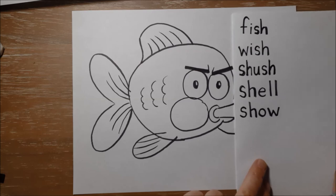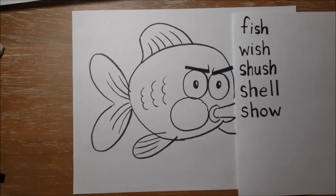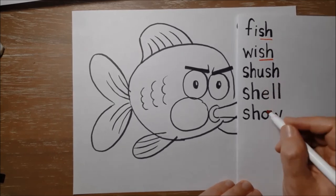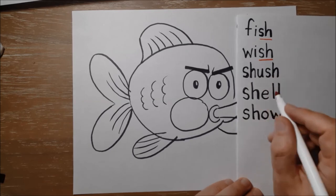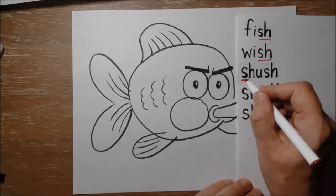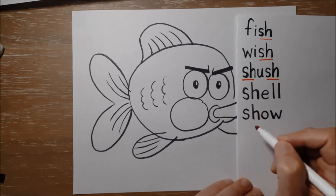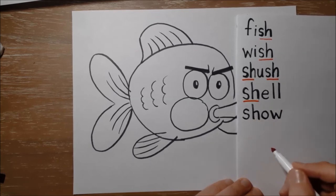Here are some words with the sh-sh sound. Fish, fish, wish, shush. Shush has two sh-sh sounds. Sh, sh, shush. Shell, and show.